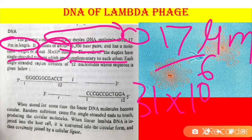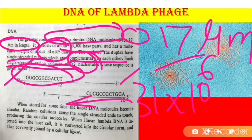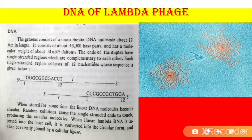Each single-stranded region consists of a 12-nucleotide sequence. This 12-nucleotide sequence runs from 5 prime to 3 prime at each end.